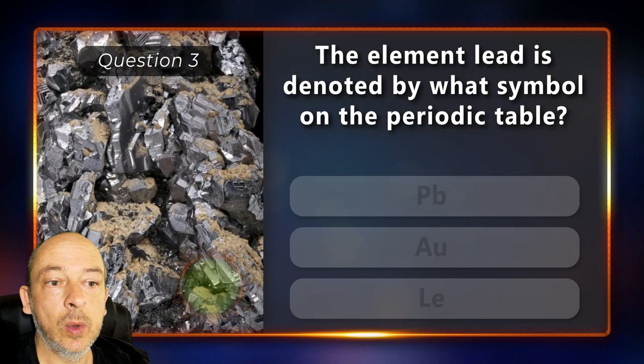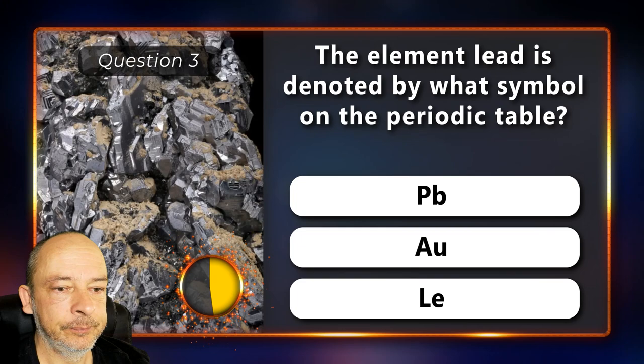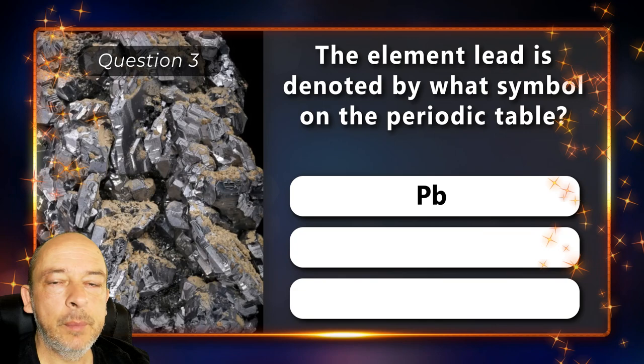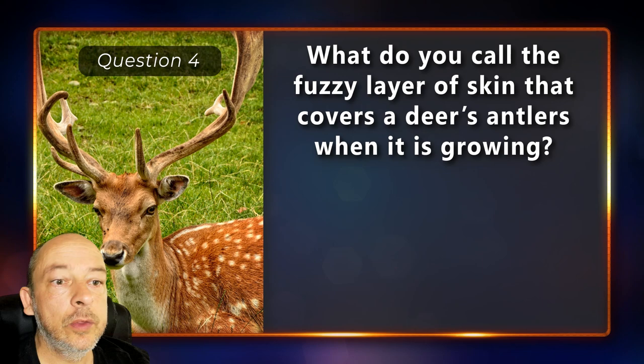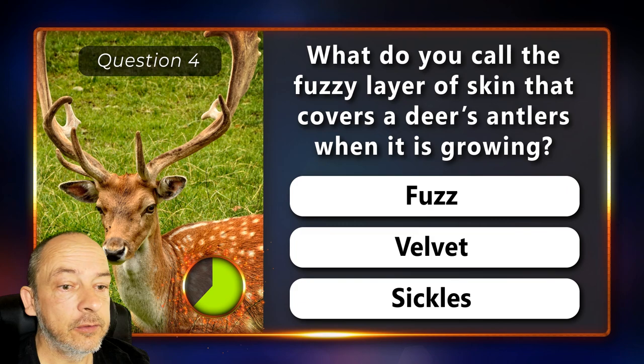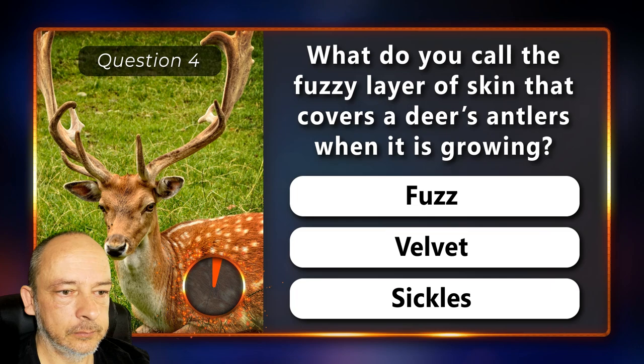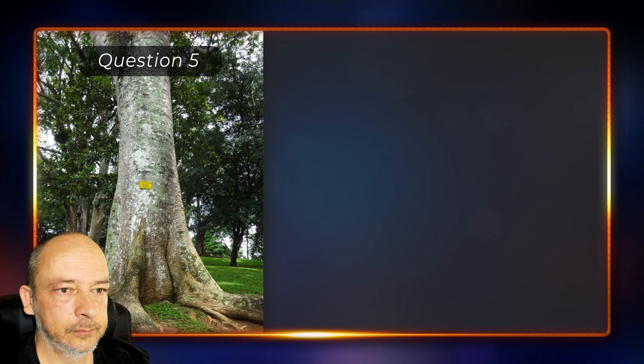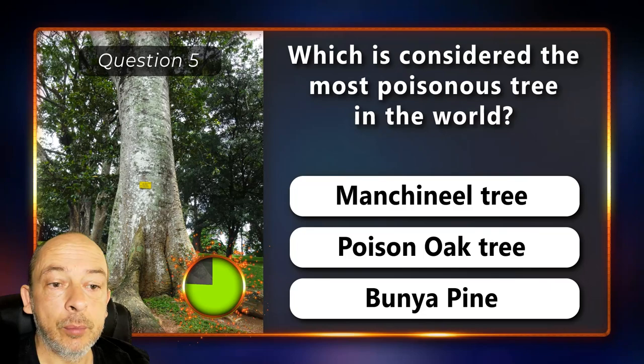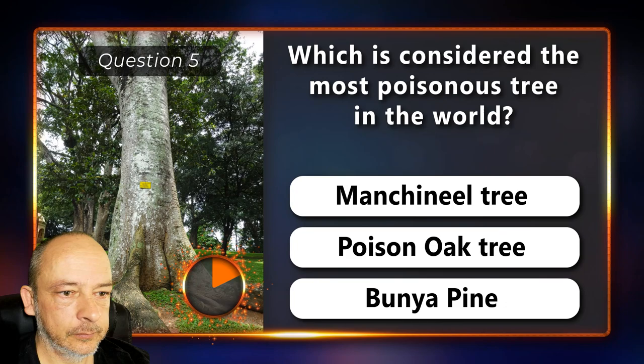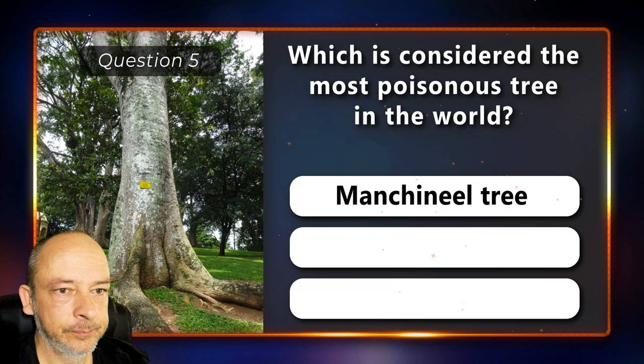Question 3: The element lead is denoted by what symbol on the periodic table? PB, AU or LE? The answer is PB. Question 4: What do you call the fuzzy layer of skin that covers a deer's antlers when it's growing? Is it fuzz, velvet or sickles? It's called velvet. Question 5: Which is considered the most poisonous tree in the world? The manchineel, the poison oak or the bunya pine tree? It's the manchineel tree.